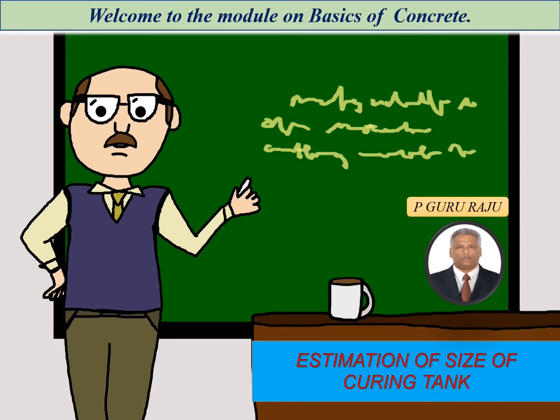Welcome to the module on basics of concrete. Today in this module we will be discussing about how to estimate the size of the curing tank, which is one of the major requirements in order to make sure that your implementation of the quality management system and the assurance for the quality of concrete being produced in the batching plant is achieved.